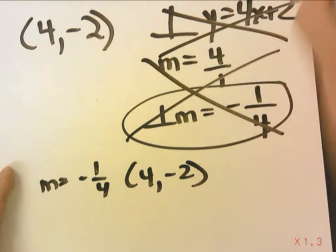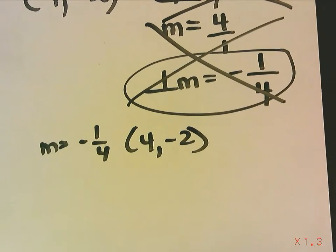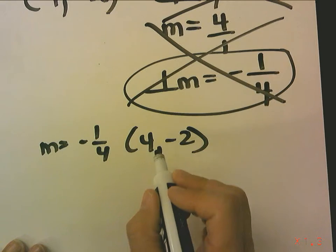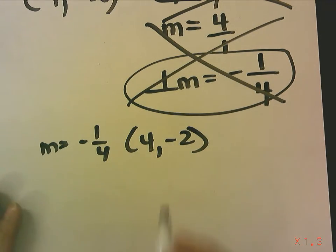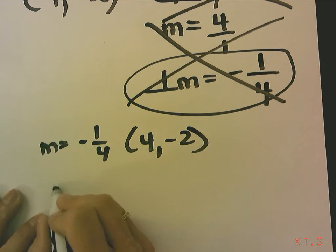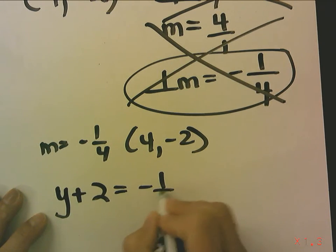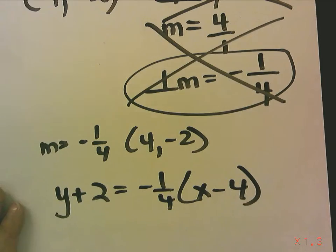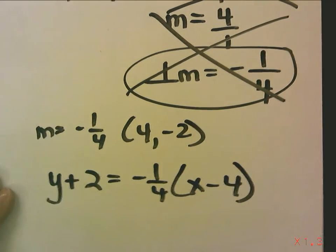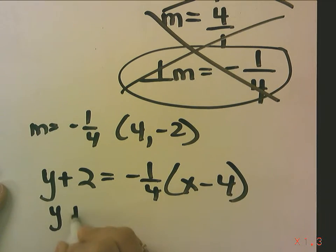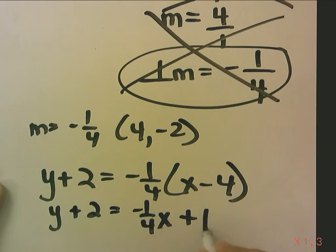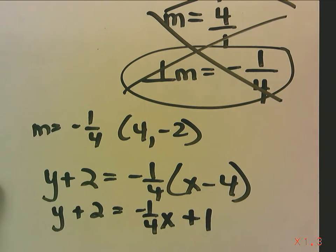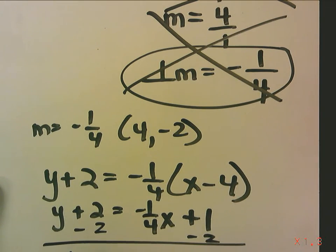So I get rid of this information because it's no longer necessary, and I am just going to try to find with a point and a slope an equation. Now if I have a point and a slope, regardless of what form they want me to end up in, I should start with point-slope form. And they want slope-intercept form, so that means I am going to have to distribute. Now negative 1 fourth times negative 4 is a positive 1, and then I subtract 2. So I end up with y equals negative 1 fourth x minus 1.